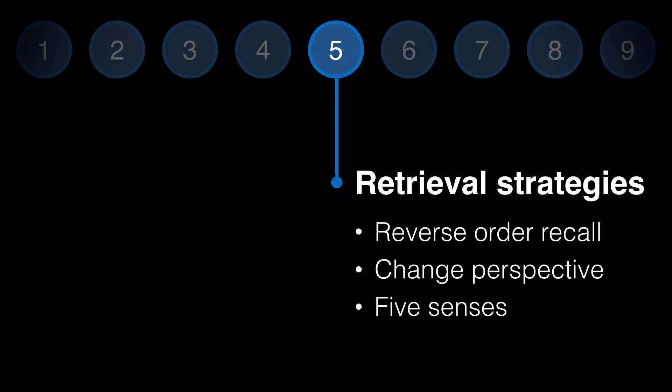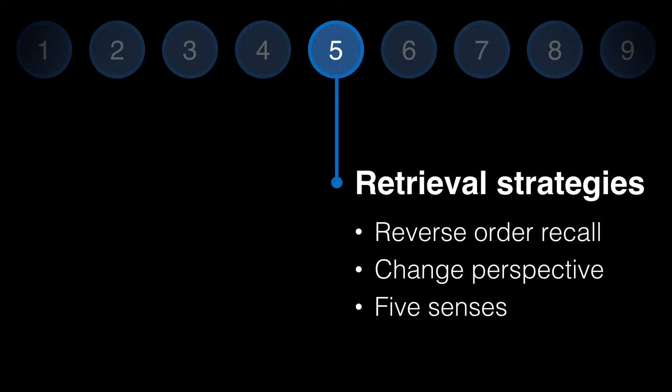In phase five, varied retrieval strategies such as reverse order recall and the change perspective instruction can be used. Before they are used, it should be explained to the witness why these methods are being used, as a witness might not be particularly happy being asked multiple times to recall the same thing. Depending on the type of event, the use of each of the five different senses can also be used as further retrieval prompts — for example, in an arson case, smell might be highly important, so you would ask the witness to try and recall what they were smelling at the time.